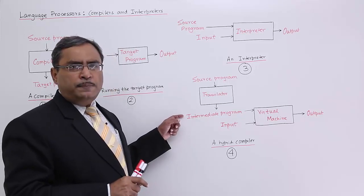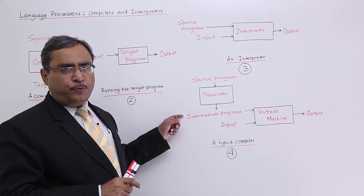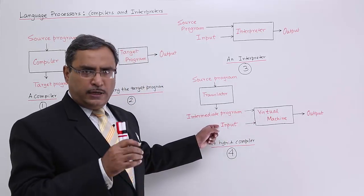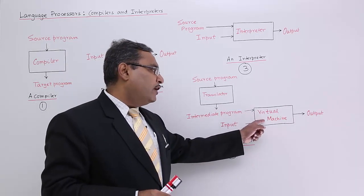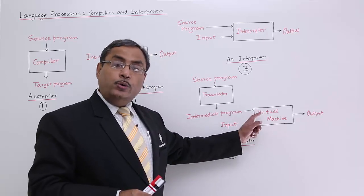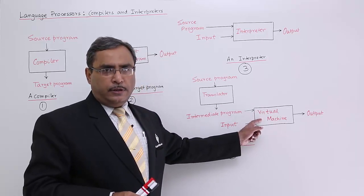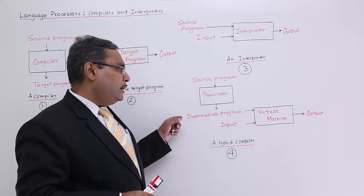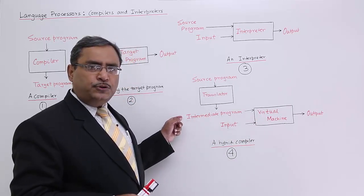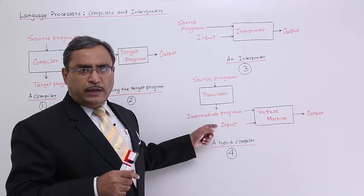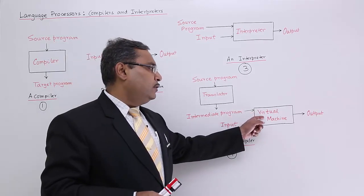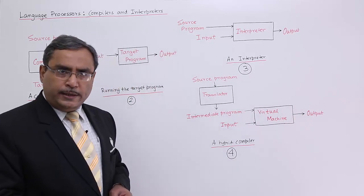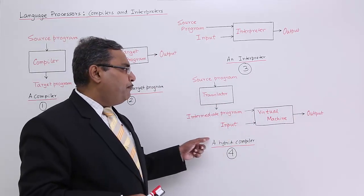This platform-independent version of the program will be executed — after taking inputs from the input devices — through a virtual machine, which will be platform dependent. This virtual machine is platform dependent; it takes the intermediate language program as input, along with input from the input devices, and executes and processes it to produce the required output. This is known as a hybrid compiler.